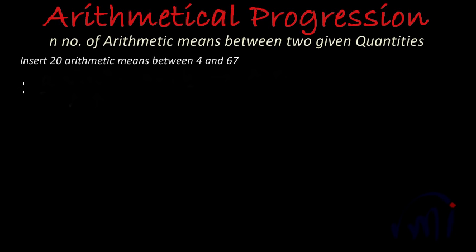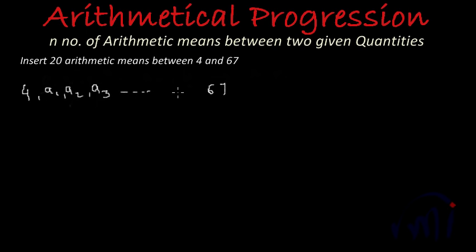The example we are going to solve is: insert 20 arithmetic means between 4 and 67. So we have two numbers — first is 4 and the last one is 67. We have to insert 20 arithmetic means, starting from a1 then a2 then a3 and this will last till a20, and the last number will be 67. So our first term a is equal to 4, and our last term L is 67.